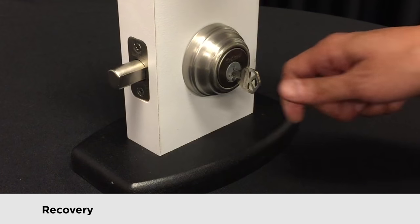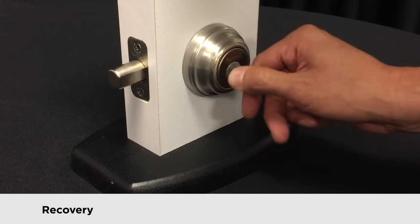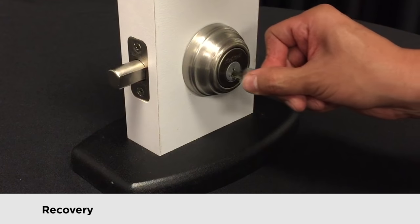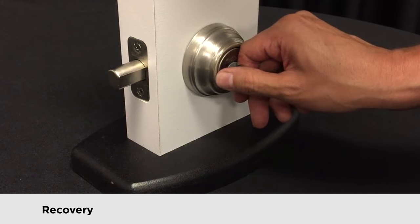If the key comes out more than halfway, try again. Remember, index finger and thumb against the cylinder, and pull just a tiny bit on the key while rotating to the right.